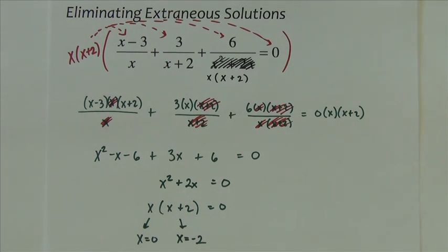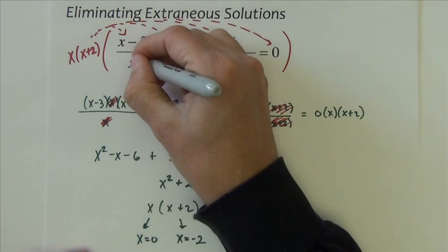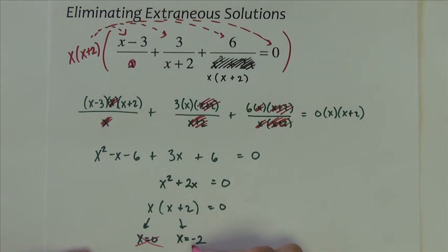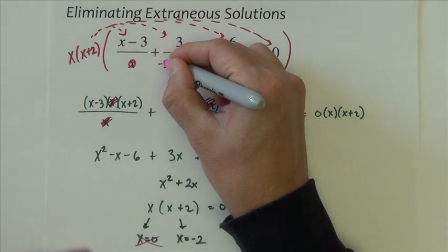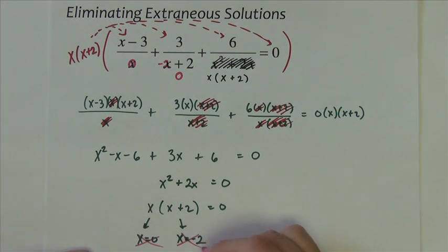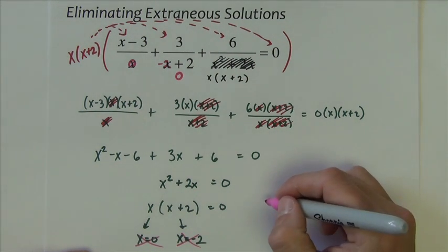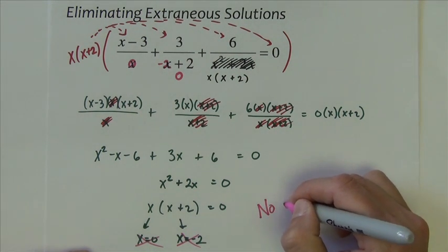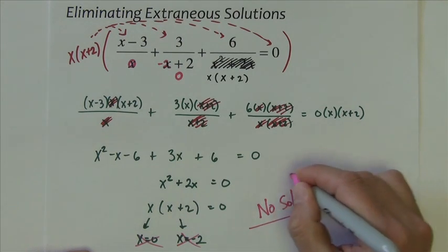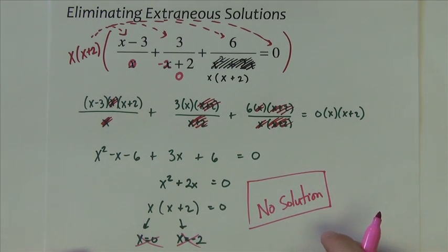Now, it just so happens that those are the exact two numbers that I don't want. Because when I plug 0 in for this x, it makes divide by 0, so I don't want that. When I plug negative 2 in for this x, negative 2 plus 2 makes 0. I don't want that either. So the only two answers that I got are, in fact, not answers to the problem. So this problem has no solution.